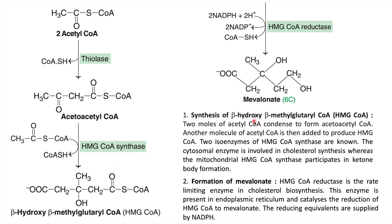HMG-CoA synthase combines one more acetyl CoA with acetoacetyl CoA. The carbonyl carbon reacts, converting the carbonyl group into a hydroxyl group, and the product formed is beta-hydroxy-beta-methylglutaryl CoA (HMG-CoA). Next, the enzyme HMG-CoA reductase performs a reduction at this carbonyl group, converting it to CH₂OH.